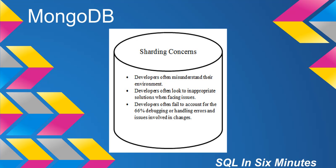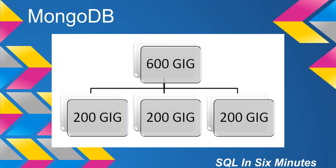Let's suppose we have a collection that's 600 gigabytes — we'll call this collection A — and we have documents that have some fields, though some of the documents don't have all those fields. Let's say we have a field called zip code, and that zip code field exists in every single document. That is the only field other than the ID field that exists in every document. So from a sharding perspective, we only have a couple of options: we can either shard by the object ID, which is indexed by default, or by the zip code provided that it's indexed.